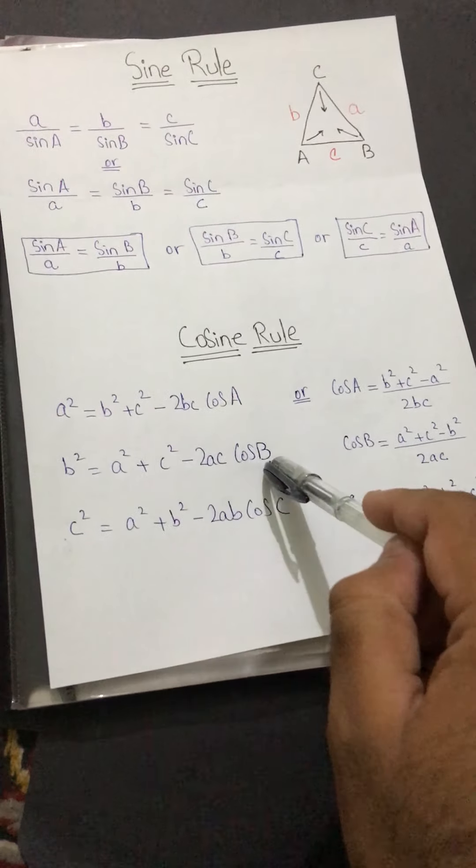These two sets of formulas are basically the same — you just change the subject. Cosine rule is used when only one angle is given and you need to find the side opposite to that angle. If two angles and one opposite side are given, use sine rule. If only one angle is given, use cosine rule.